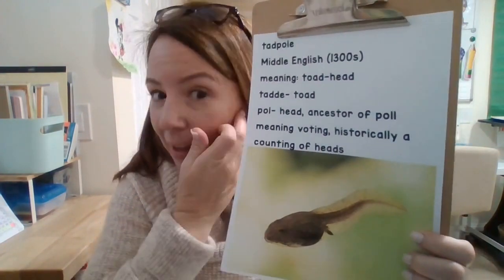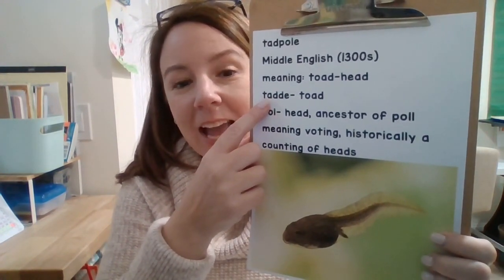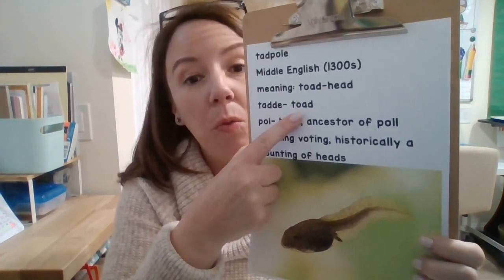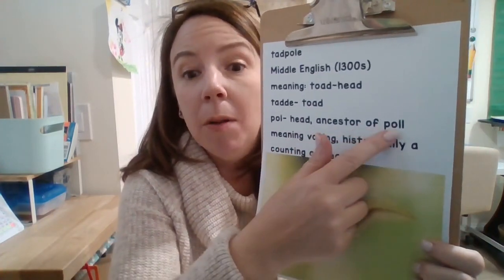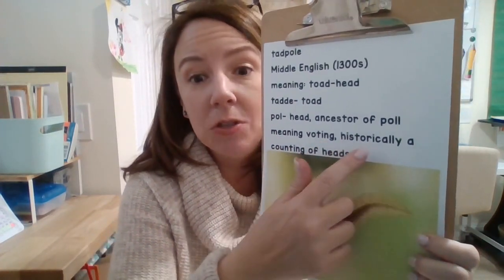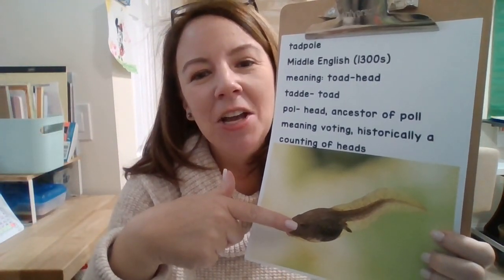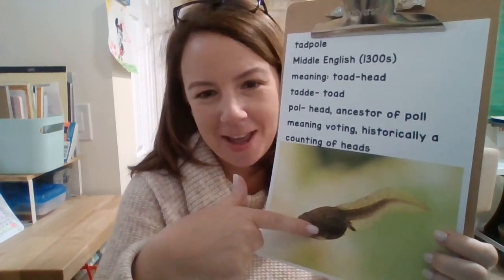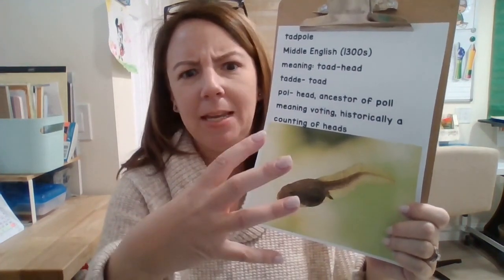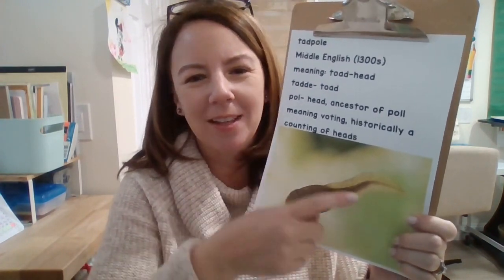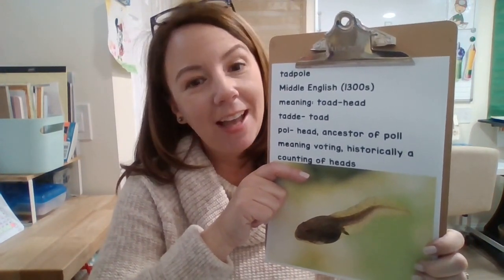In Middle English, dating to the 1300s, the meaning is 'toad head.' The toad part comes from 'tadde' — T-A-D-D-E — which meant toad back in Old English. And 'pole' meant head. Pole is an ancestor of P-O-L-L, which we use today, meaning voting — historically meaning a counting of heads. So tadpole is literally 'toad head.' When we look at a tadpole, the head is rather big and pronounced, with a little wavy tail in the back. That is the reason for the meaning of tadpole.